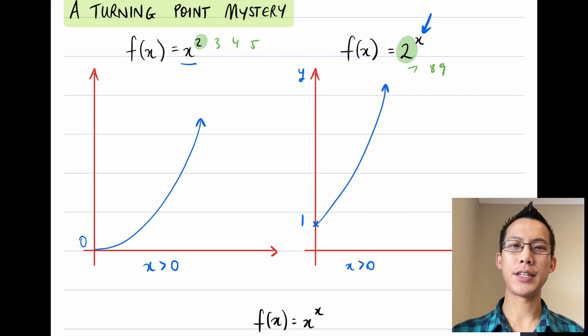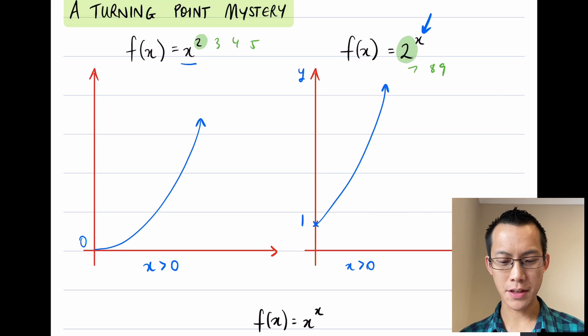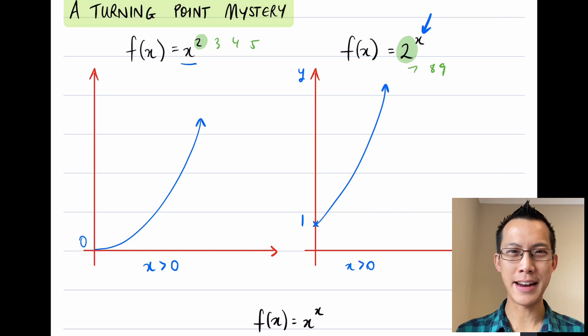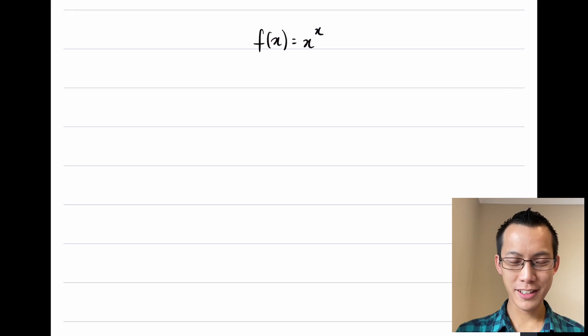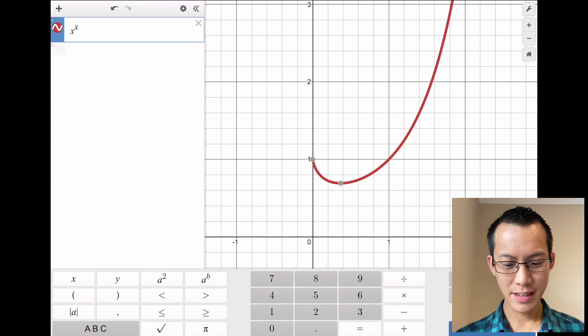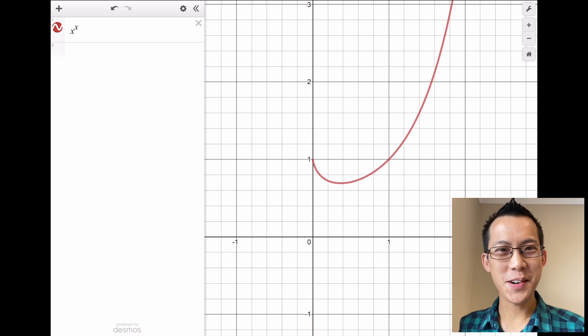Have a think about what you would guess this thing looks like, remembering what our component functions look like—the things that we've put together to make this. The polynomials over there on the left have this upward trajectory, and so do the exponentials over there on the right. Have you got an idea of what you think these things might combine into?